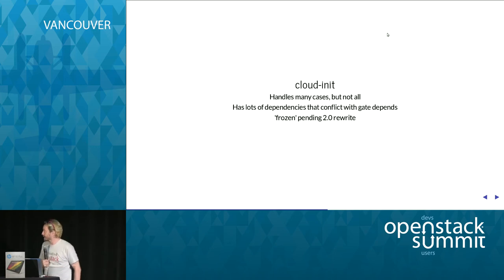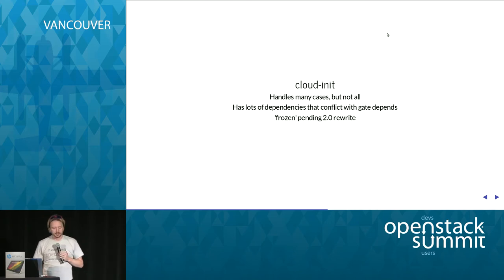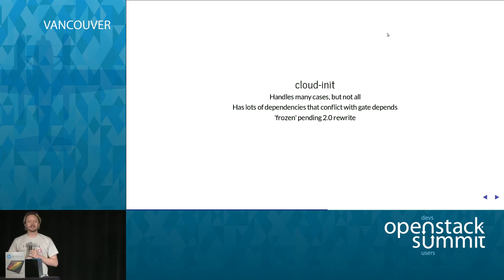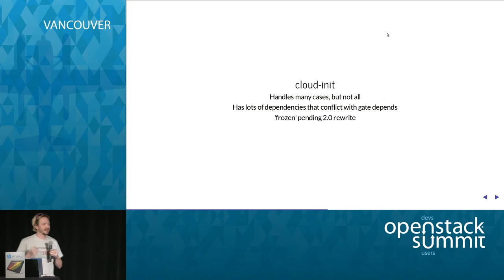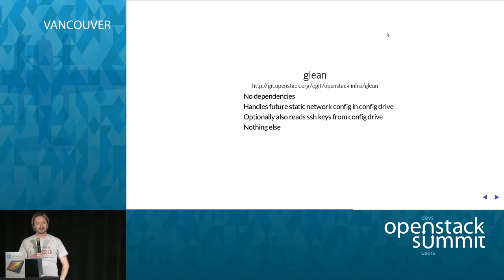The thing with cloud-init is that it's great and solved a lot of problems, but it doesn't handle all cases — especially the case where networking information isn't actually available in standard places. Part of that has to do with patches that haven't landed to OpenStack yet. It also has dependencies that conflict with my particular use case, which is spinning up nodes to test OpenStack. cloud-init depends on the same things that OpenStack depends on, which makes testing the dependencies in OpenStack hard. It's also kind of frozen because they're rewriting it.